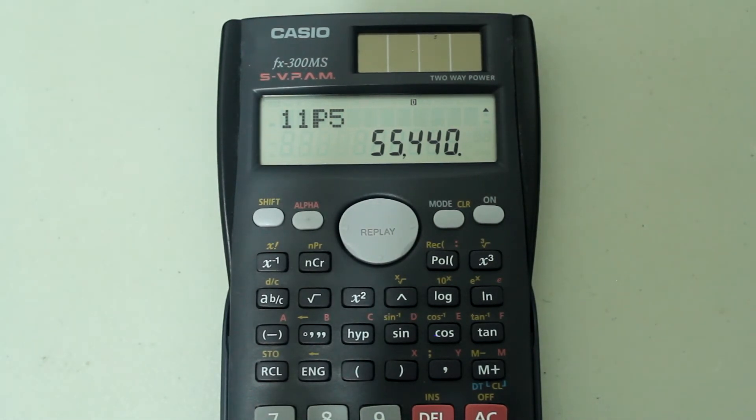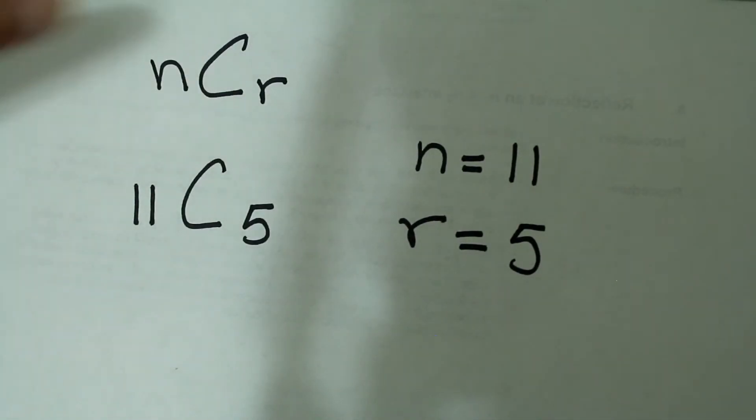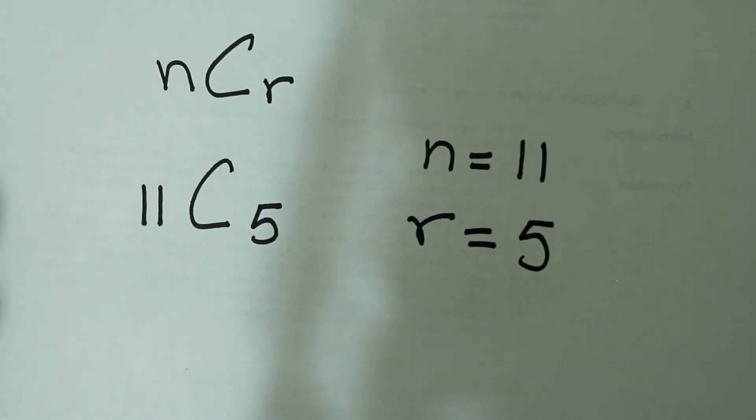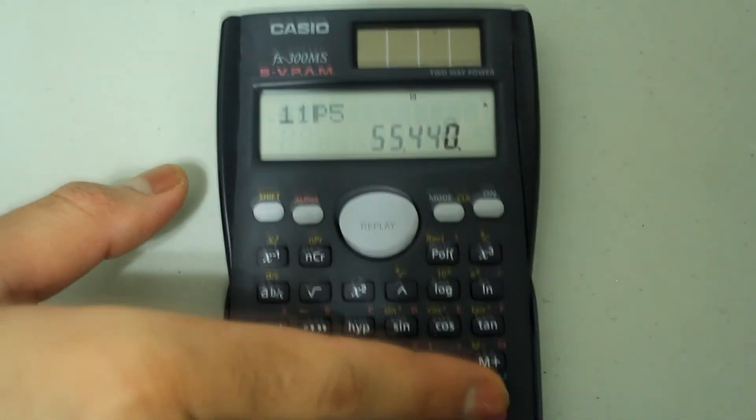Next, I'm going to do a combination. A combination is a selection of objects from a group where the order does not matter. For example, if we want to figure out the possible number of different combinations of 5 objects selected from a group of 11 objects, it would be written in this form where we have nCr. n is 11 and the r value is 5. So just as before, let's clear this out.